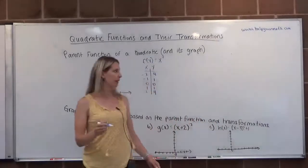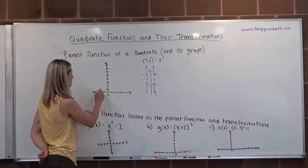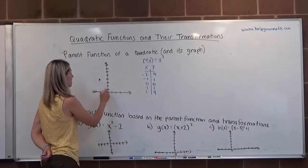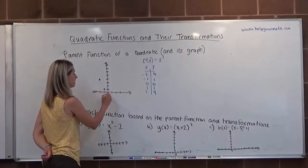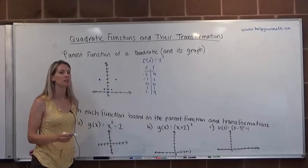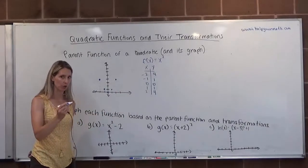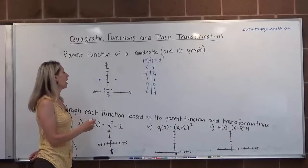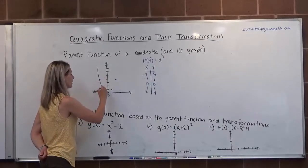So we're going to graph these five points. Negative two, up one, two, three, four. Negative one, up one. Zero, zero. One, one. And two, up four. And again, when we connect these, we connect them with a nice curve. Do not put a point at the bottom. Parabolas do not have points, they have curves.